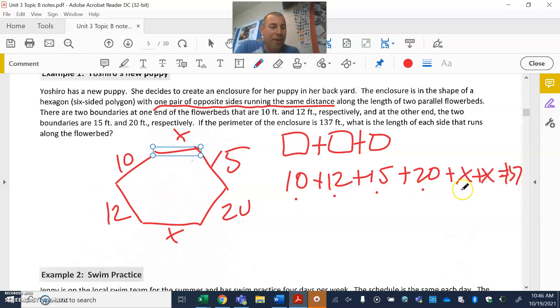That's the six sides: one, two, three, four, five, and six. Now that we've got our equation down, we're just going to clean things up. We're going to simplify first. I've got 22, 32, 37. I've got 57 plus 2x equals 137.